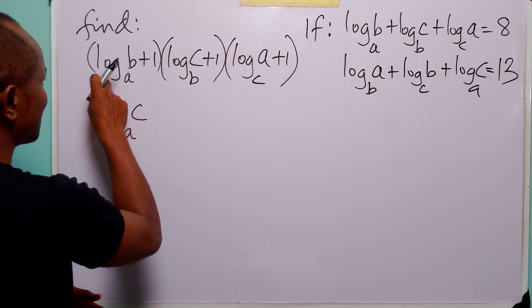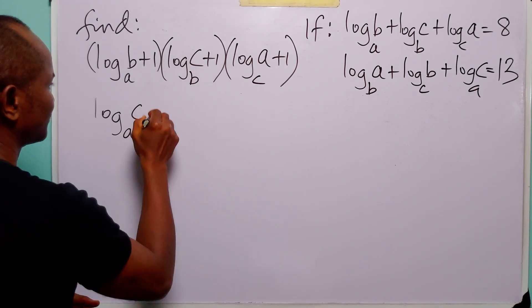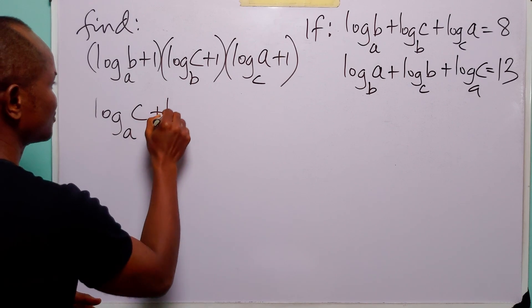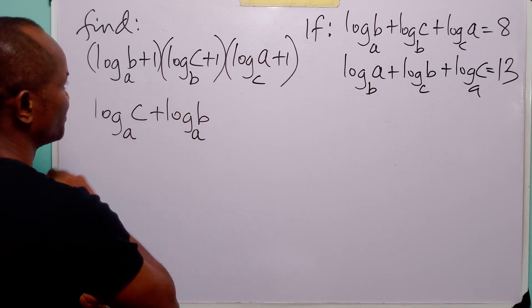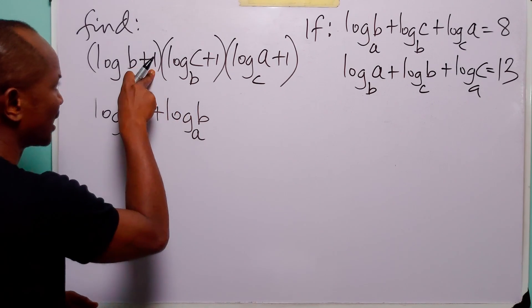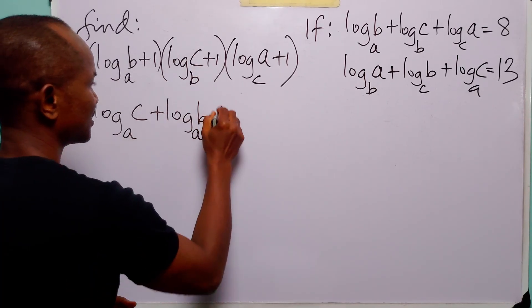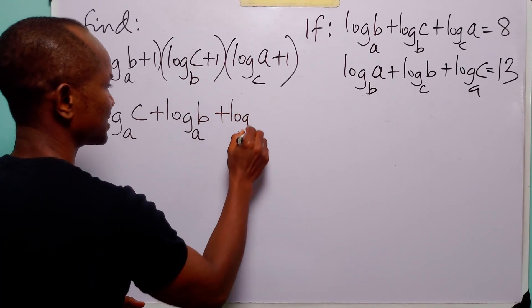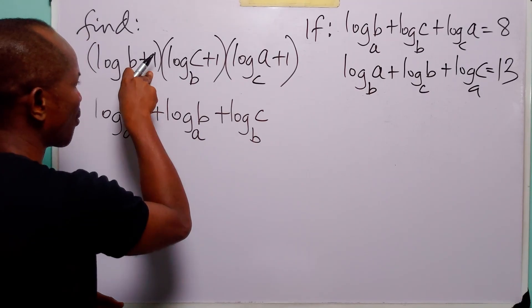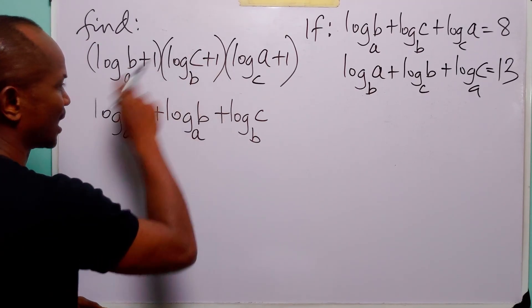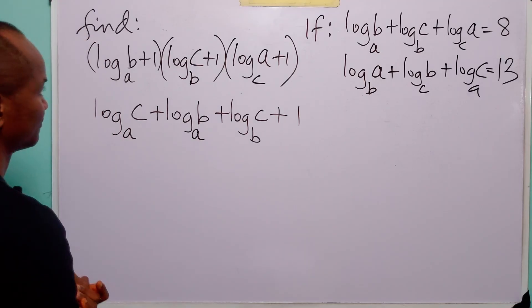We also have log to base a of b multiplied by 1, which equals log to base a of b. Then 1 multiplied by log to base b of c equals log to base b of c. And 1 multiplied by 1 equals 1.